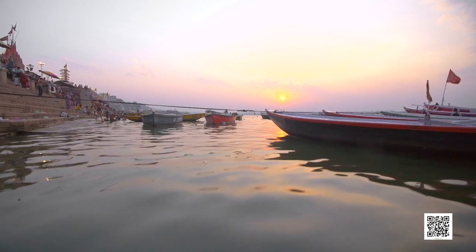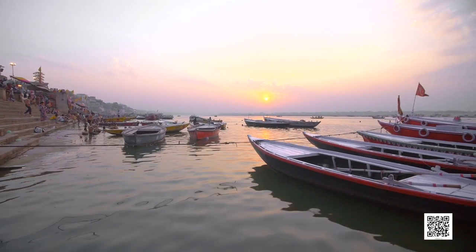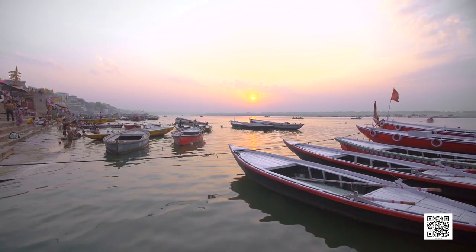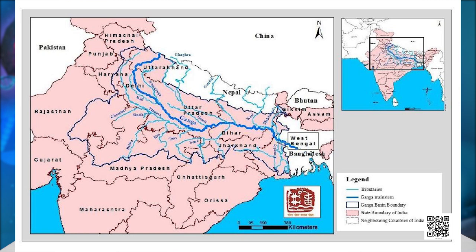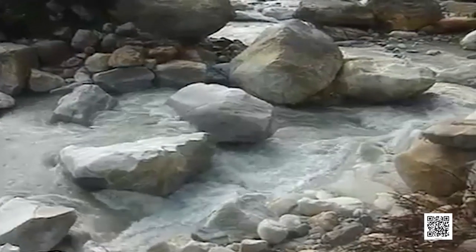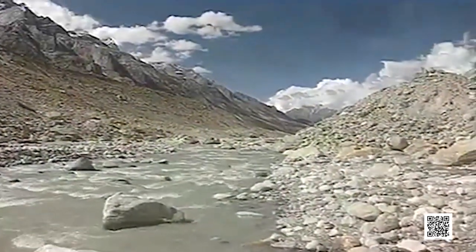Let us discuss a case study: one of the longest and holiest rivers of India, the Ganga. The Ganga Basin accounts for a little more than one-fourth — around 26.3% — of the country's total geographical area and is the biggest river basin in India, covering Uttarakhand, Uttar Pradesh, Bihar, Delhi and parts of Punjab, Haryana, Himachal Pradesh, Rajasthan, Madhya Pradesh and West Bengal. The Ganga Basin is bounded in the north by the Himalayas and in the south by the Vindhyas, and runs over 2500 kilometers from Gangotri in the Himalayas to Ganga Sagar in the Bay of Bengal.